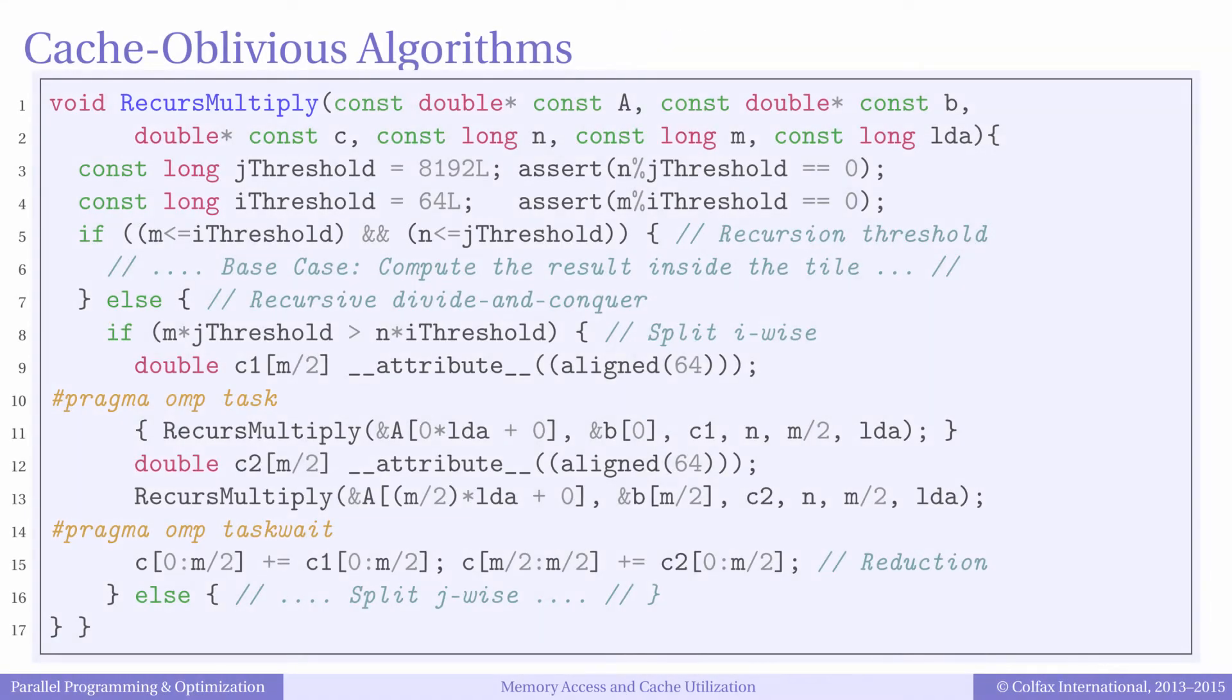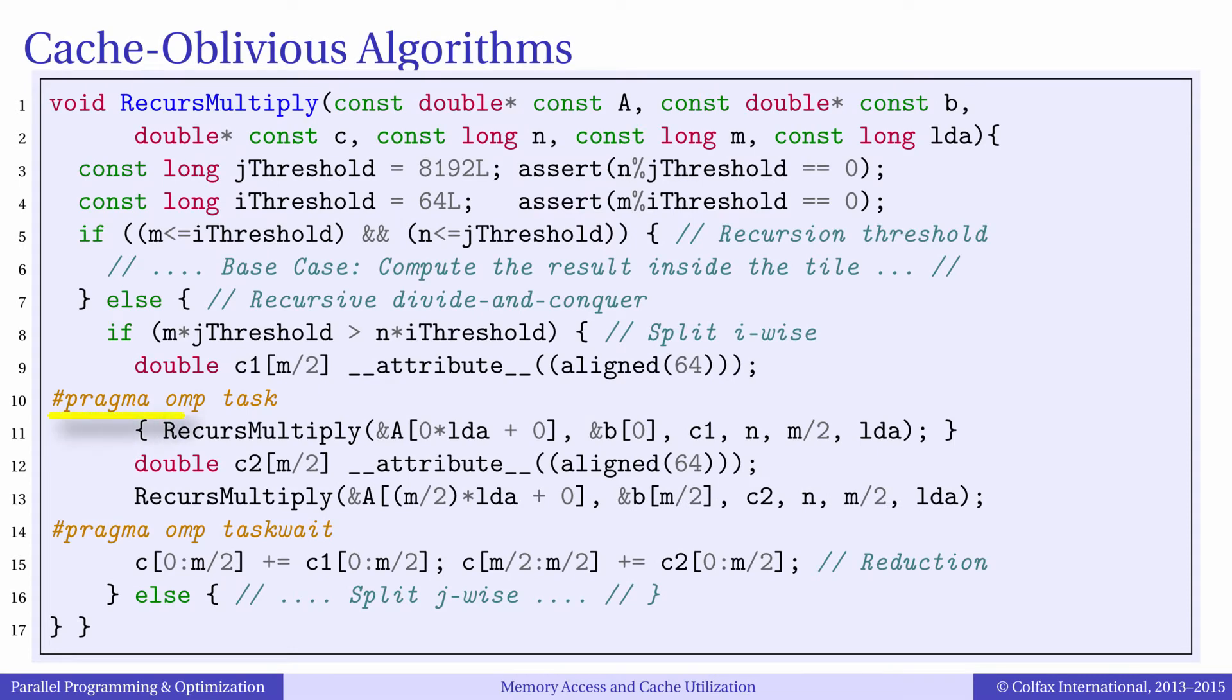To implement parallel recursion, we use OpenMP tasks, similar to the example that we saw in episode 4.6. The recursive function takes the matrix A and the vector B and returns the resulting vector C. Those may actually be parts of A, B, and C inside of the recursion algorithm. The function also takes the size of the matrix, which may be smaller than the original matrix size, and when recursion starts.